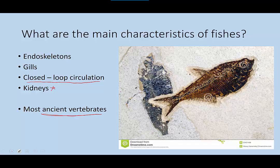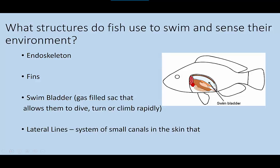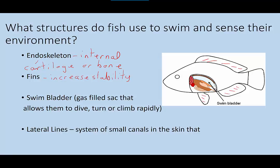So let's look more specifically at some of the structures fish have that they use to swim and sense their environment. They have an endoskeleton, which is internal, and it could be made of either cartilage or bone. Fish also have fins — fins on the top, fins on the belly. These fins increase stability, help them turn, dive, and climb rapidly. They really help fish maneuver quickly in their environment when necessary.